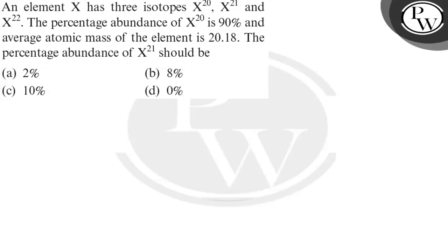Hello, let us read this question. An element X has three isotopes X^20, X^21, and X^22.